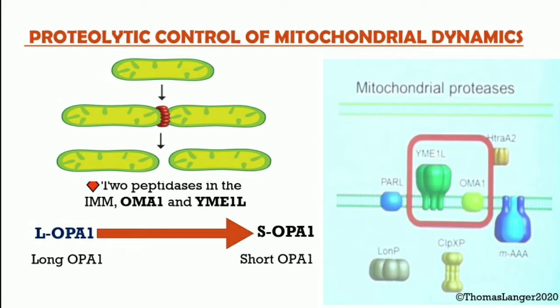Mitochondria adapt to cellular stress and various conditions under the control of proteases that reside within mitochondria and affect the balance between fusion and fission. Two proteases reside in the mitochondrial inner membrane: one is termed YME1L and the other is OMA1. YME1L is an ATP-dependent metalloprotease that forms a hexameric ring complex and is a classical quality control enzyme, and OMA1 is a stress-activated metallopeptidase also in the inner mitochondrial membrane. These two proteases control OPA1, the central player of the mitochondrial fusion machinery.